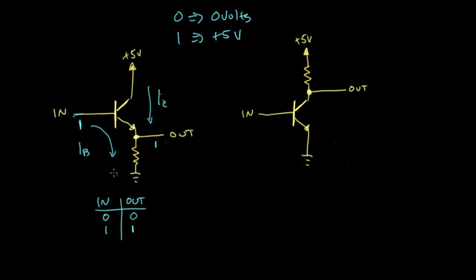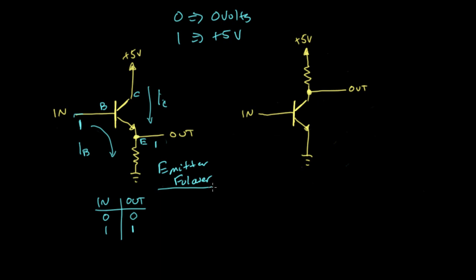There are a couple of different names for this circuit. One of them is called an emitter follower. The reason it's called an emitter follower is because the emitter follows the base — the emitter follows the input. Another name for this is a buffer. A buffer is a logic device that takes whatever its input is and gives it to you as the output. There's a symbol for the buffer used in digital logic — it's basically just a triangle, with input on one side and output on the other.